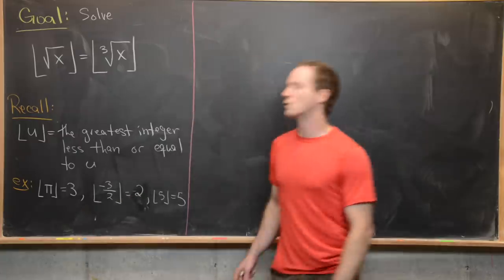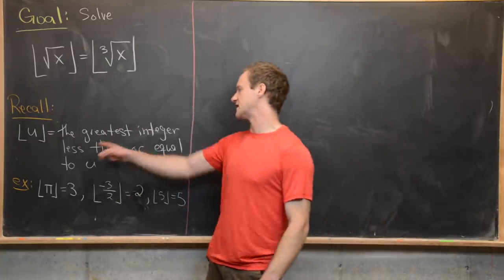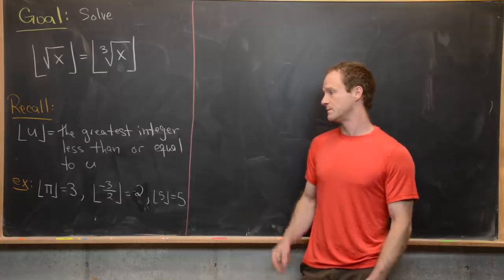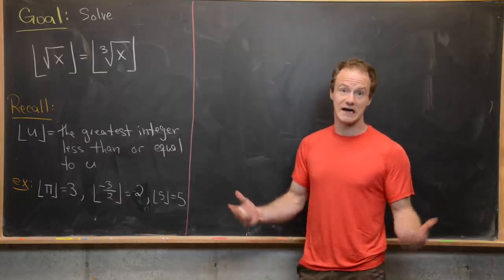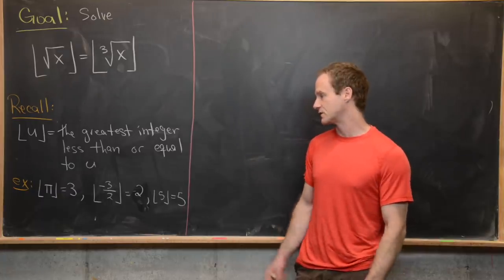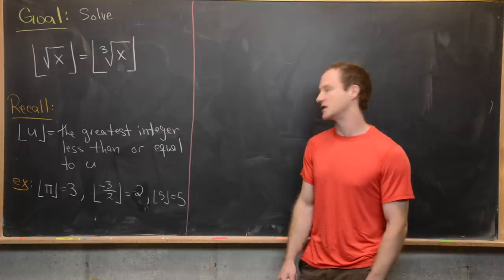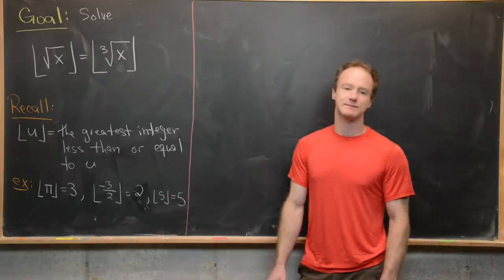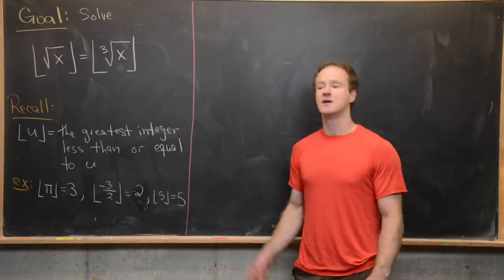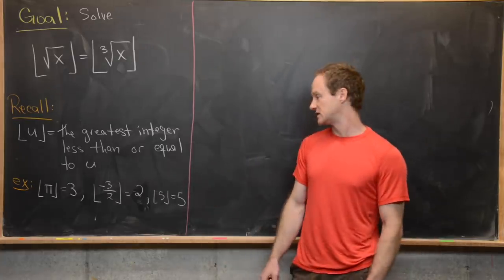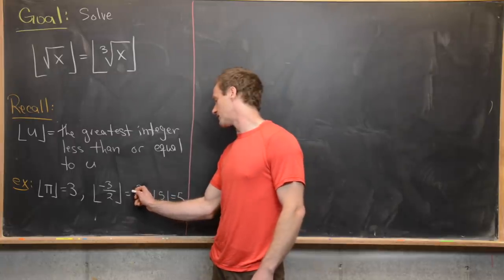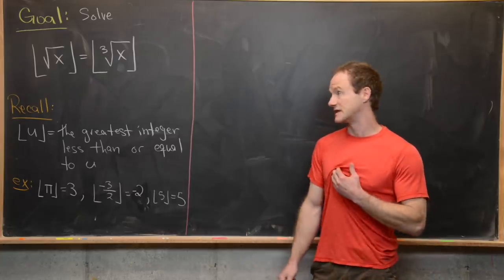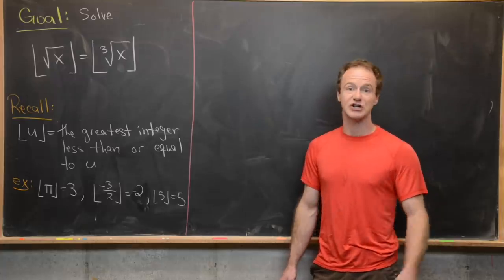The floor of u, sometimes called the greatest integer function, is the greatest integer less than or equal to u. For example, the floor of π is 3 because π is between 3 and 4. The floor of -3/2 is -2, since -3/2 is like -1.5 and we go down to the nearest integer. And the floor of 5 is 5 because we're already at an integer — if we're already at an integer, we stop.